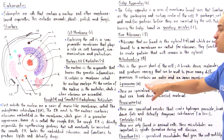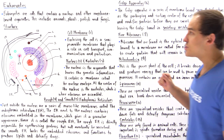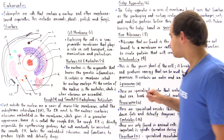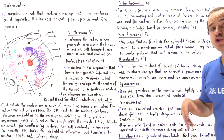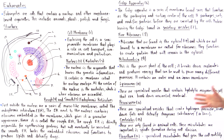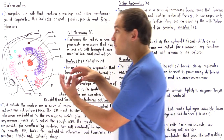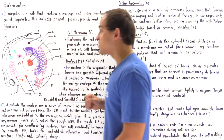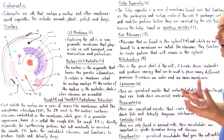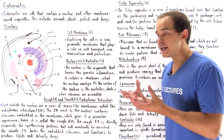Now let's move on to lysosomes — specialized vesicles that contain hydrolytic enzymes. Inside the lysosome environment, we have a relatively low pH of about five. Lysosomes help break down unwanted material inside the cell.